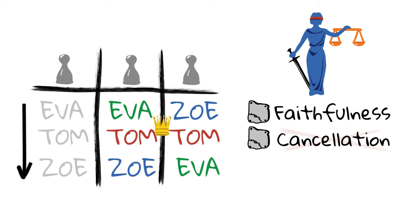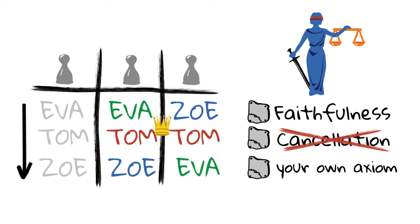You might prefer to choose Tom here, which seems to be a better compromise. In that case, you would have to abolish the cancellation axiom and introduce a new axiom. This new axiom should posit that, in case of a tie, you prefer options that don't score lowest for some of the voters.